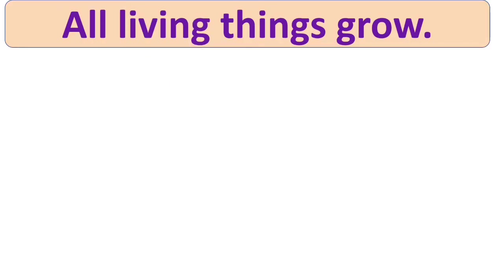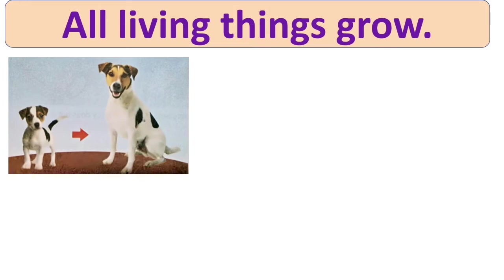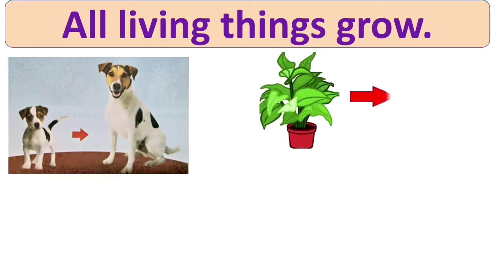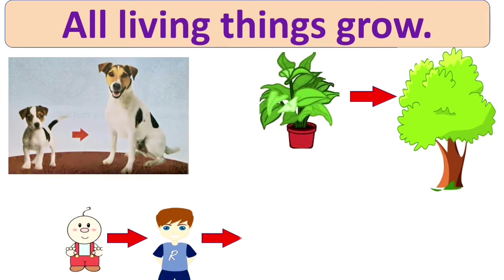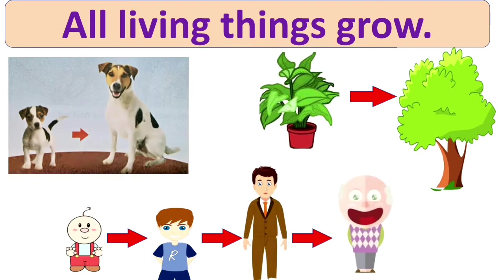The next difference is that all living things grow — they grow and change their shape and size. Like, a puppy grows into a dog, a small plant grows into a big tree, and similarly, a small child grows to become a boy, then grows to become a young man, and a young man grows to become an old man.